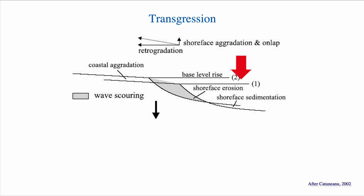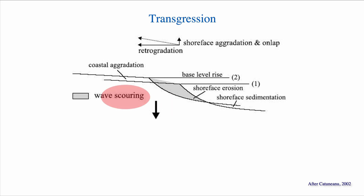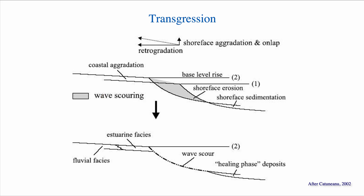If we go from 0.1 to 0.2, we have a base level rise. But as you can see, as suggested by this gray area here, the whole chunk of sequence 1 is eroded thanks to wave scouring. That's a problem because it means that we will miss part of the record and we'll have a lot of the transgressive system tract and potentially some of the low stand tract being eroded during the transgression.